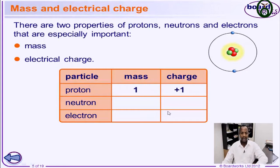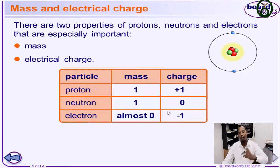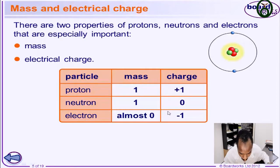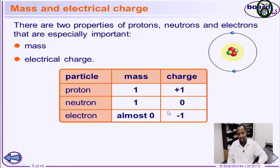For protons, it has a mass of 1 and it is positively charged. For neutrons, it has a mass of 1 and it has no charge. For electrons, it has a mass of almost zero — which is like 1 over 1,840, or 1 over 1,850, or 1 over 2,000 as seen in different textbooks. But it all means the same thing because the value is relatively close to zero. So electrons do not really have a tangible mass — it is almost negligible.